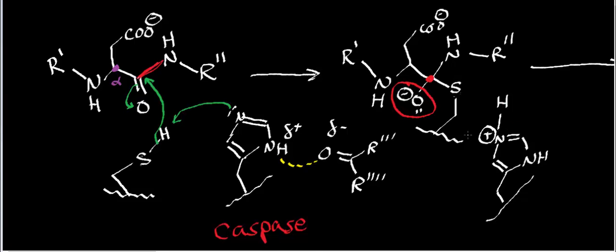Notice now that the caspase, through the cysteine residue, is now covalently attached to the protein that it's attacking — which in the case of a caspase would ordinarily be another caspase. Now we have the tetrahedral intermediate, and it's quickly going to collapse. The pi bond reforms as the electrons on the alkoxide of the tetrahedral intermediate push out, kicking off the leaving group — which in this case is the amine. The amine leaves and picks up the proton from the histidine, regenerating the resting state of the histidine residue.